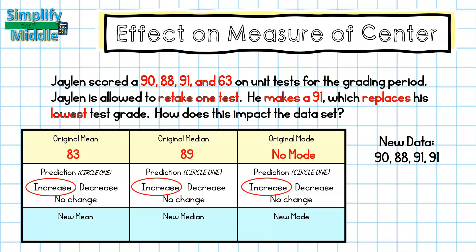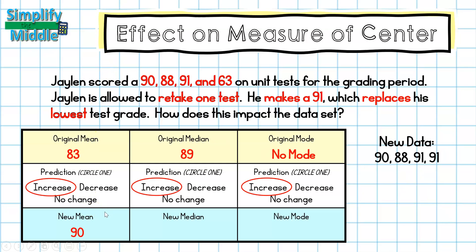My new data is 90, 88, 91, and 91. I find my mean by adding these points together, which gives me 360, and dividing by 4, which gives me 90 for my new mean. So I can see the mean did increase. Next, for my median, I have 88, 90, 91, and 91. I'll cross off my two outermost numbers.